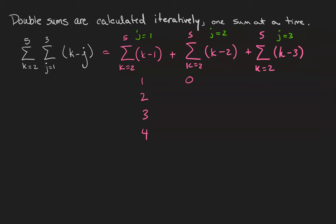2 minus 2 is 0, 3 minus 2 is 1, 4 minus 2 is 2, 5 minus 2 is 3. 2 minus 3 is negative 1, 3 minus 3 is 0, 4 minus 3 is 1, and 5 minus 3 is 2.